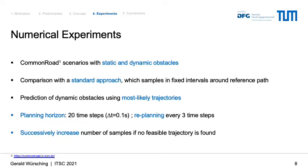We evaluated our concept using scenarios from the CommonRoad database including both static and dynamic obstacles. We compare our approach with a baseline approach that samples in fixed intervals around the reference path. Dynamic obstacles are predicted using their most likely trajectories. For all experiments, we plan trajectories for 20 time steps and re-plan every three time steps. To choose the number of samples, we successively increase the number of samples if no feasible trajectory is found, beginning with coarse sampling and increasing until reaching a predefined maximum.